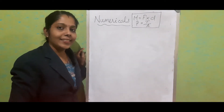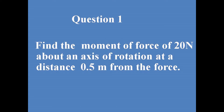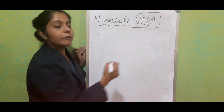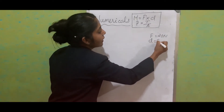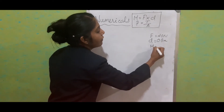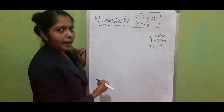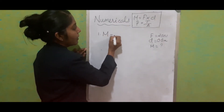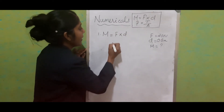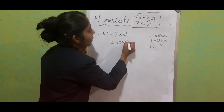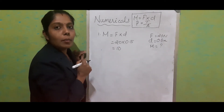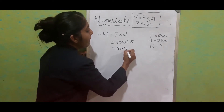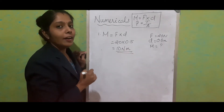Let's see the first question. Force is given as 20 Newton and the perpendicular distance is given as 0.5 meter. We have to find out the moment of force. We use the equation: M is equal to force into distance, that is equal to 20 into 0.5. We get 10 Newton meter. So this is our first answer.